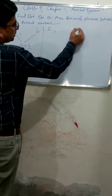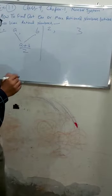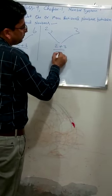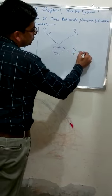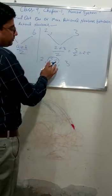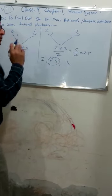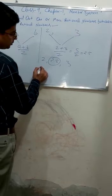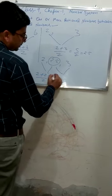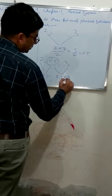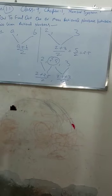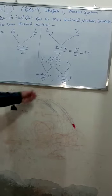Suppose the numbers are 2 and 3 and we want to find two numbers between them. We will add them: 2 plus 3 divided by 2, which is 5 upon 2, that is 2.5. So we can see 2, 2.5, and 3. Now 2.5 is greater than 2 and less than 3 — it lies between 2 and 3. If we want to find more numbers, we can repeat the same method: 2 plus 2.5 divided by 2, and 2.5 plus 3 divided by 2.